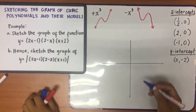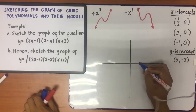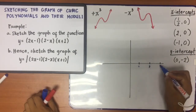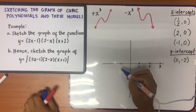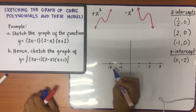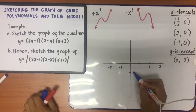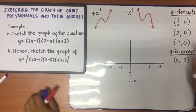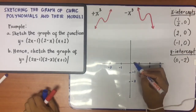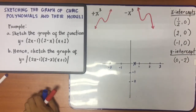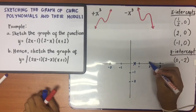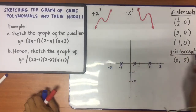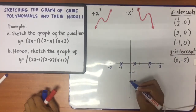After knowing that the shape of the sketch will follow the negative x³ form, we will plot the x-intercepts and the y-intercept. You need to have an estimate of your intervals — mark 1, 2, 3 and −1, −2 on the axes. Plot (1/2, 0), (2, 0), (−1, 0), and the y-intercept (0, −2).